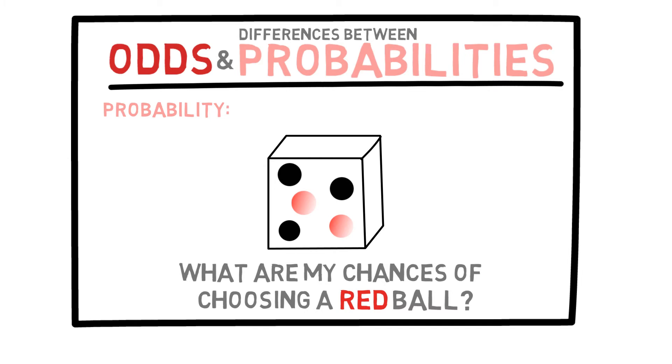the probability of choosing a red ball is the number of red balls divided by the number of total balls in this box. In this case, there are two red balls and a total number of five, so it is two divided by five or forty percent. That is the probability of choosing a red ball.